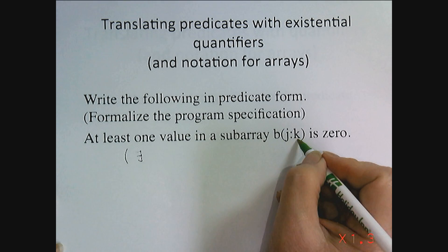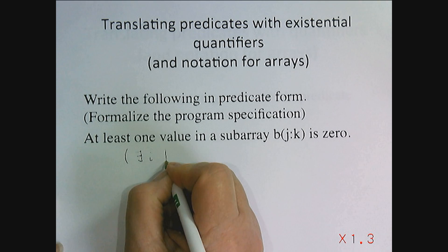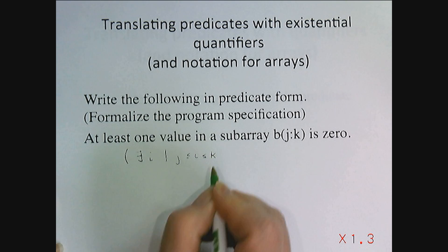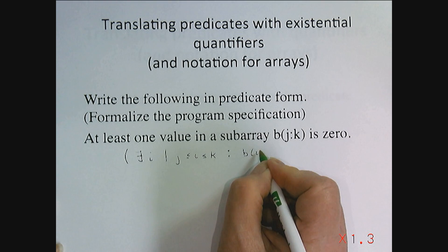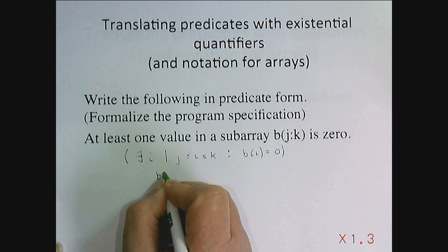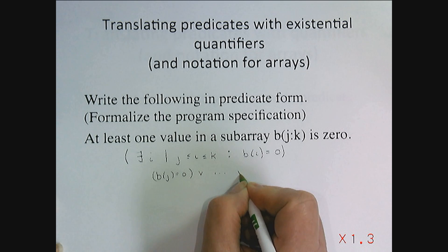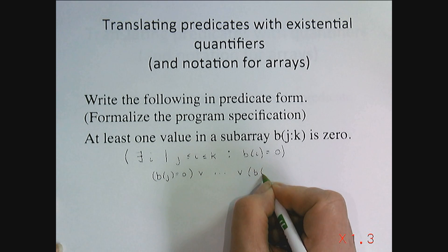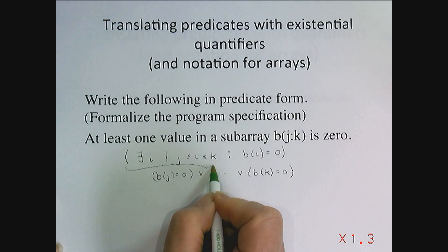I'm going to use i as my variable. So there exists an i where i ranges between j and k, could be either of these endpoints, such that b(i) is equal to zero. It's the same as b(j) is zero or the next one is zero or the next one is zero and so forth, b(k) is zero. It's a much cleaner way of writing it.